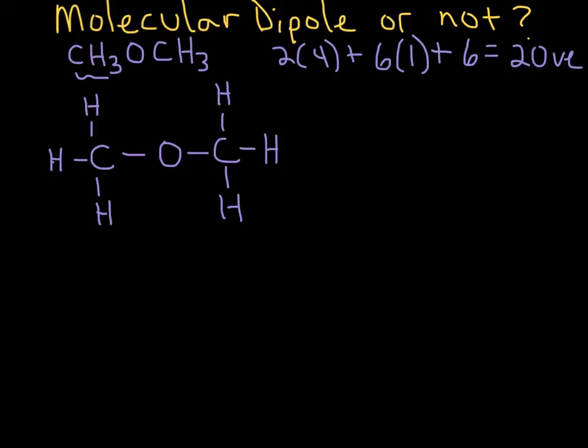But we need to check: one, oxygen does not have an octet. We also need to make sure that we have used up all 20 valence electrons. So 2, 4, 6, 8, that's around one of the carbons. 10, 12, 14, 16. So we've used 16 electrons so far. We have 20 valence electrons that we need to use. And the only place to put them is on oxygen, which completes oxygen's octet.